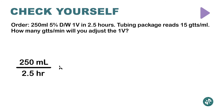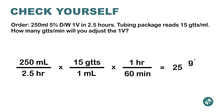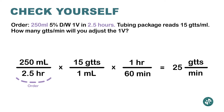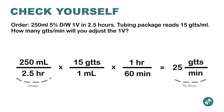Here we go. The first fraction is the order: 250 milliliters over 2.5 hours — that was given. The next thing is where I'm going: I want drops per minute. 'gtt' is the abbreviation for drops. Looking at the top I have milliliters, but I want drops; on the bottom I have hours, but I want minutes.